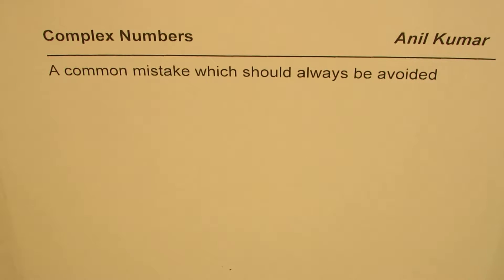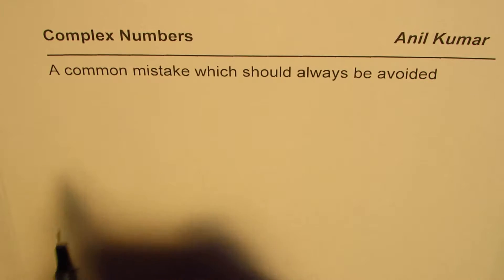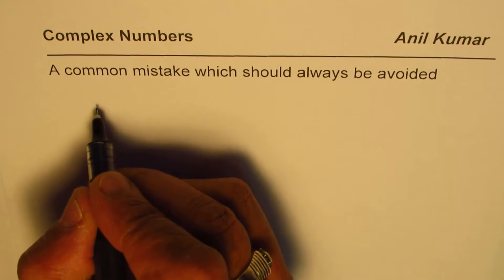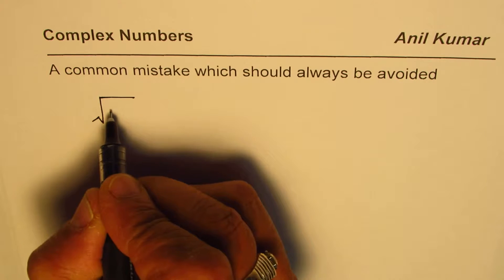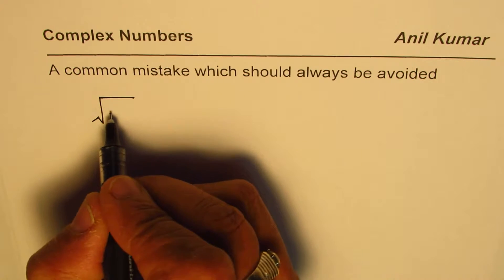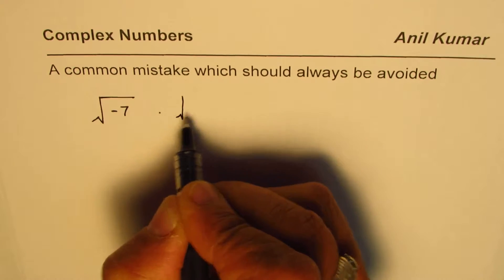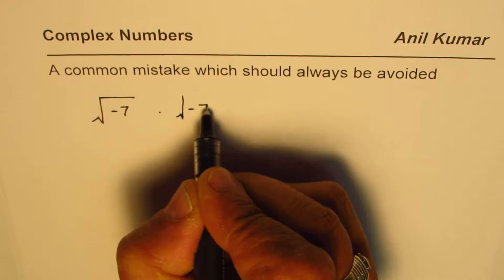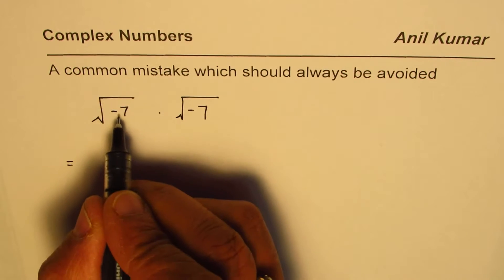I'm Anil Kumar, and in this video I'll highlight a very common mistake which we should always avoid when working with complex numbers. Let us say we have to find the product of square root of minus 7 times square root of minus 7.